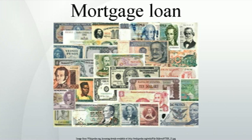For loans made against properties that the borrower already owns, the loan-to-value ratio will be imputed against the estimated value of the property. The loan-to-value ratio is considered an important indicator of the riskiness of a mortgage loan: the higher the LTV, the higher the risk that the value of the property, in case of foreclosure, will be insufficient to cover the remaining principal of the loan.